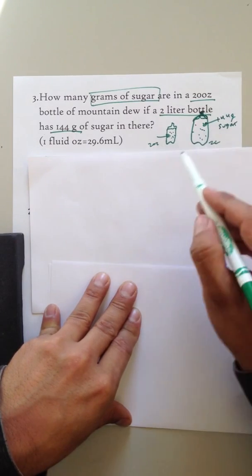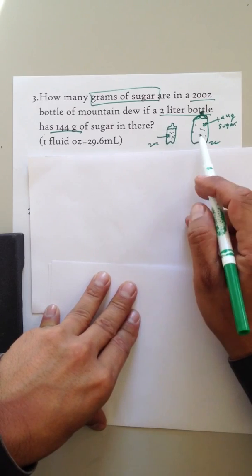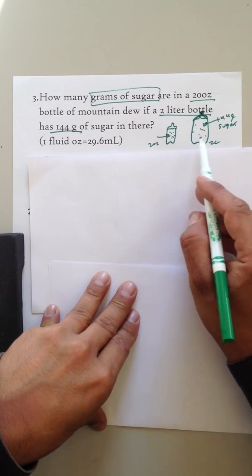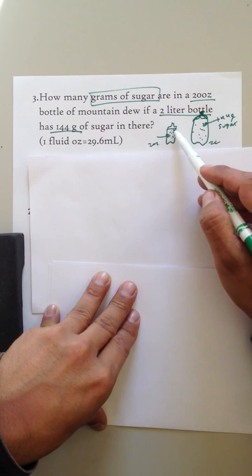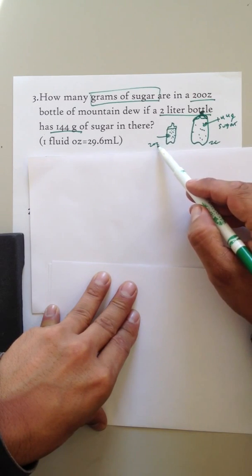So we're just trying to relate these two. We know that it's going to taste the same, it's going to have the same amount of sugar per volume. We know that it's 144 grams of sugar per 2 liters. Let's figure out how many grams per liter.